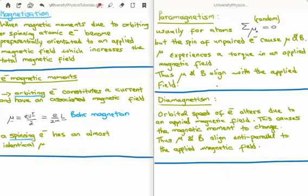Let's define paramagnetism and diamagnetism. For paramagnetism: usually for atoms the sum of the magnetic moments is zero and they're oriented in random directions. But if we think of elements which have an unpaired electron, that unpaired electron will have its own magnetic moment and field. If we apply an external magnetic field to this material, the magnetic moments will experience a torque and thus align with the applied magnetic field. Since every atom with an unpaired electron constitutes a small dipole moment, they all point in the same direction and we get superposition — we get magnetization.